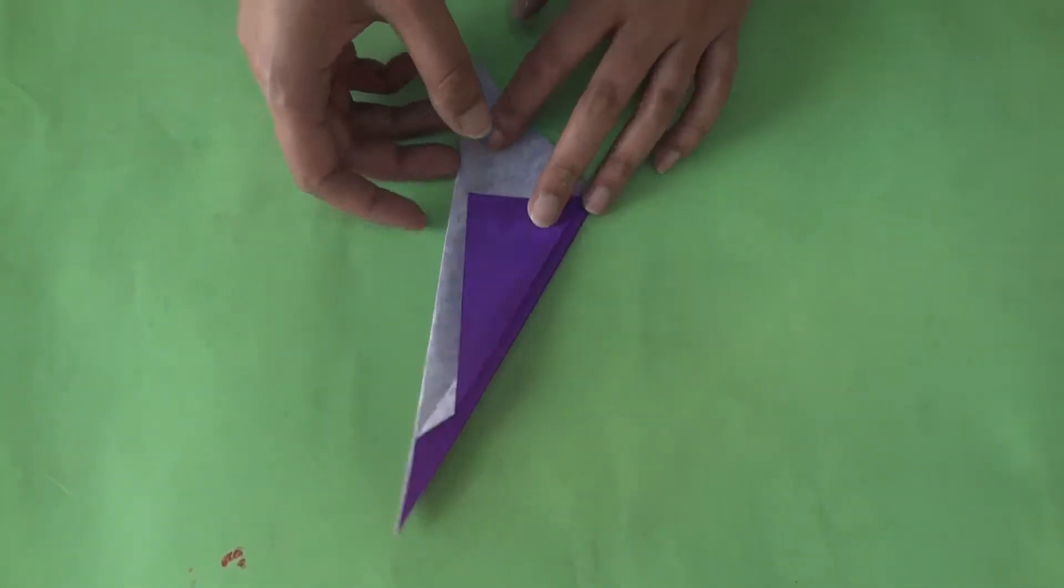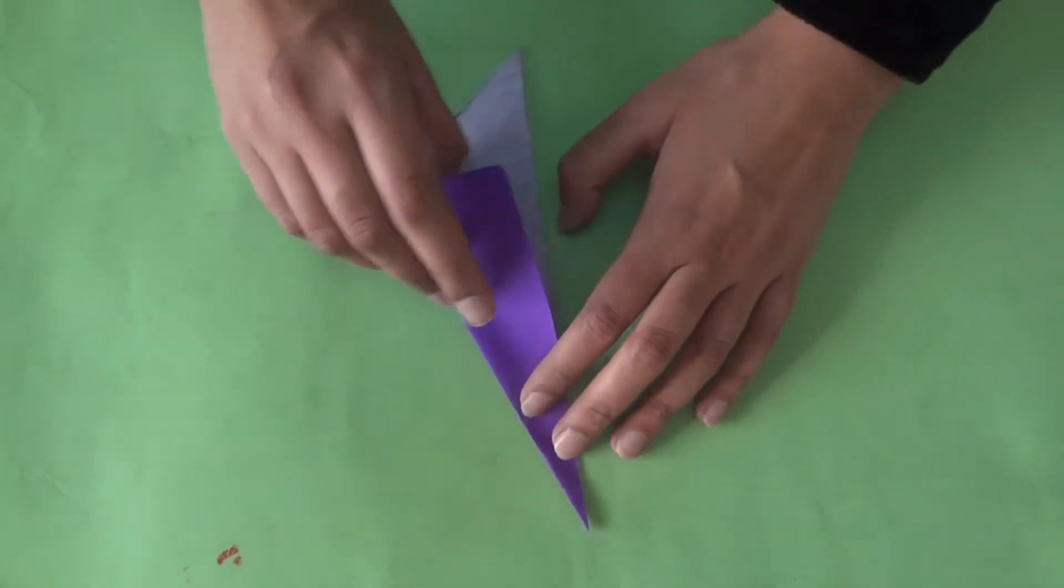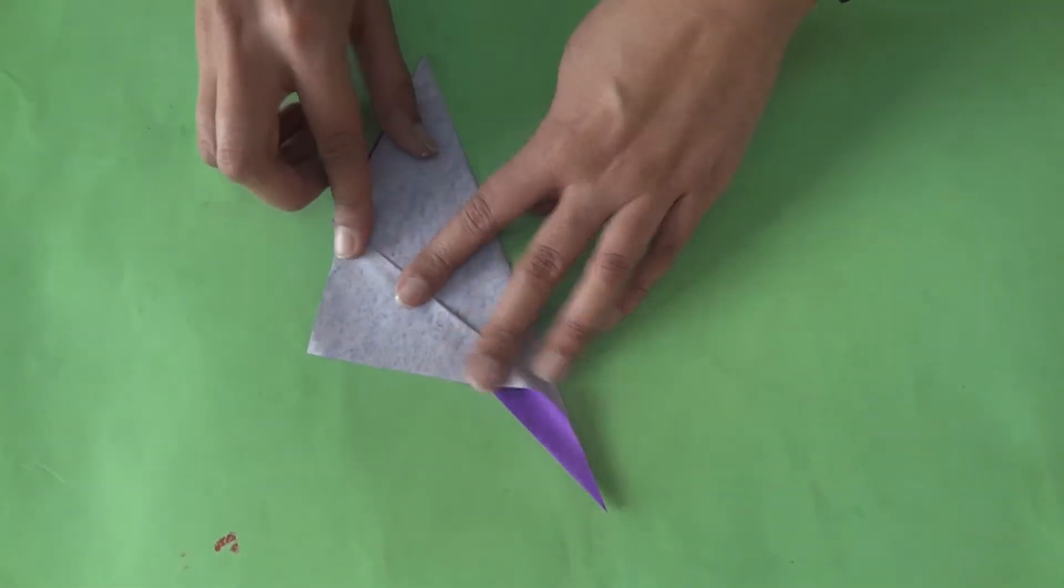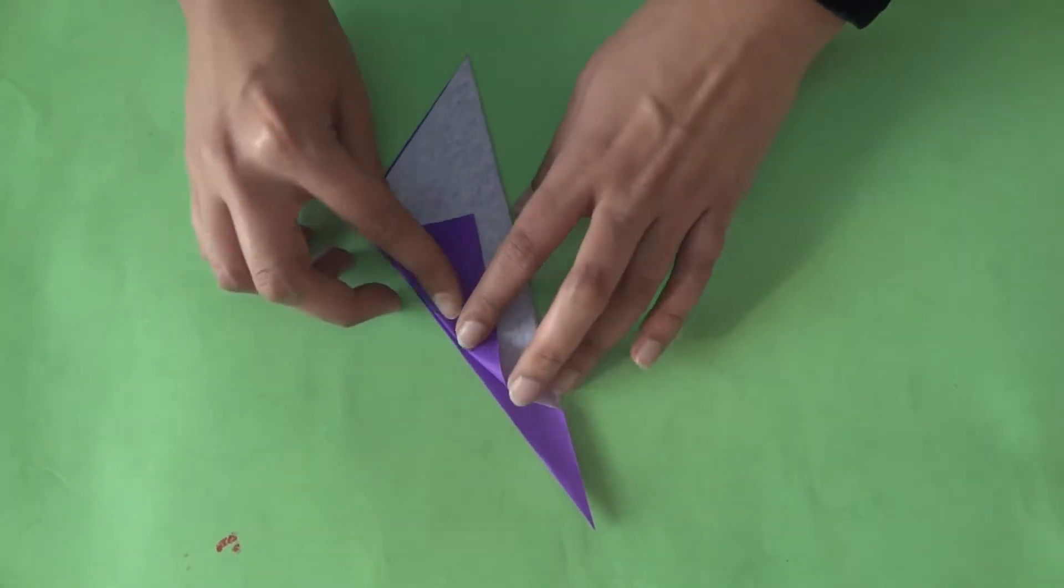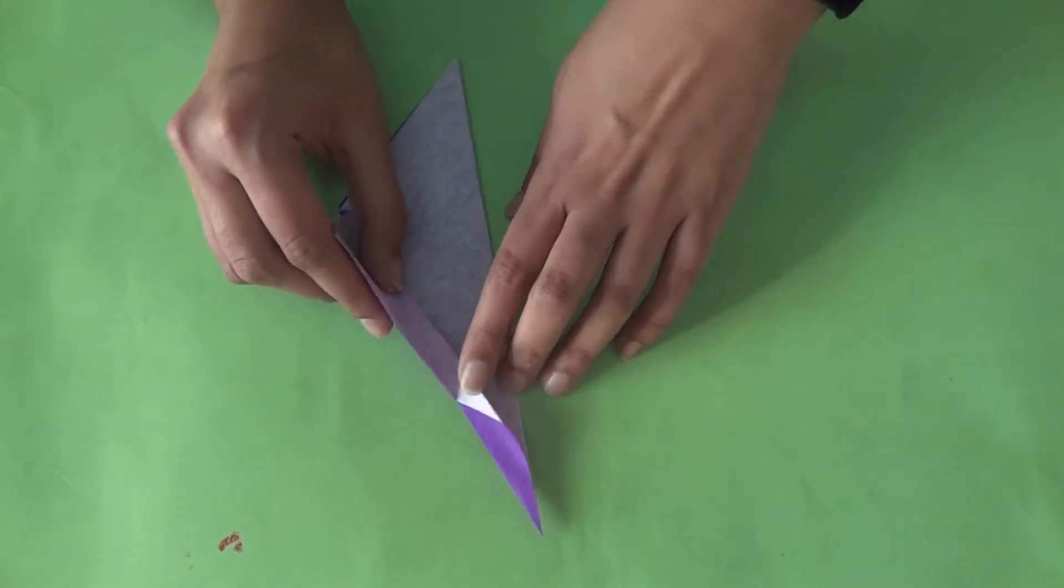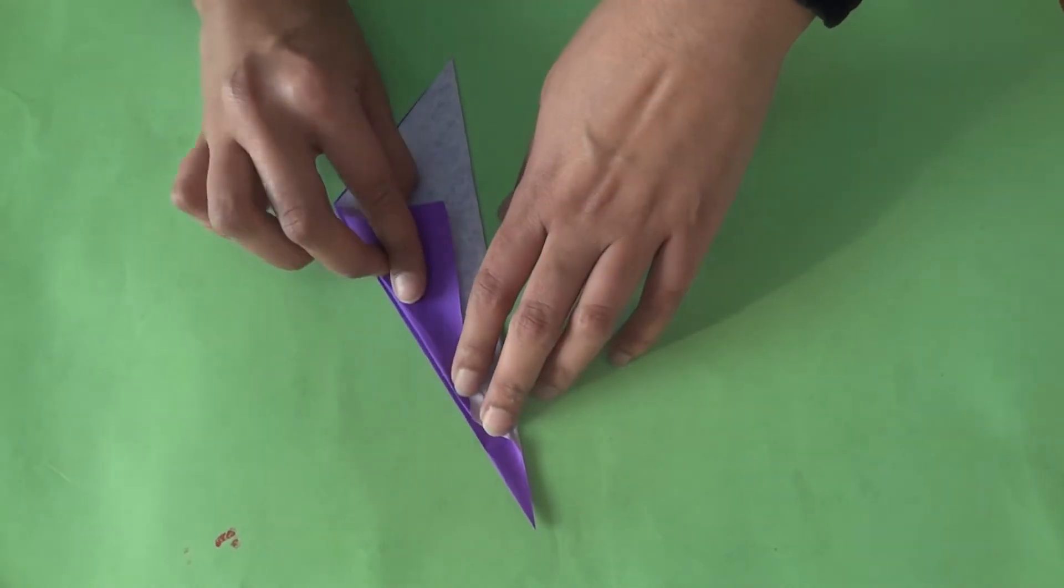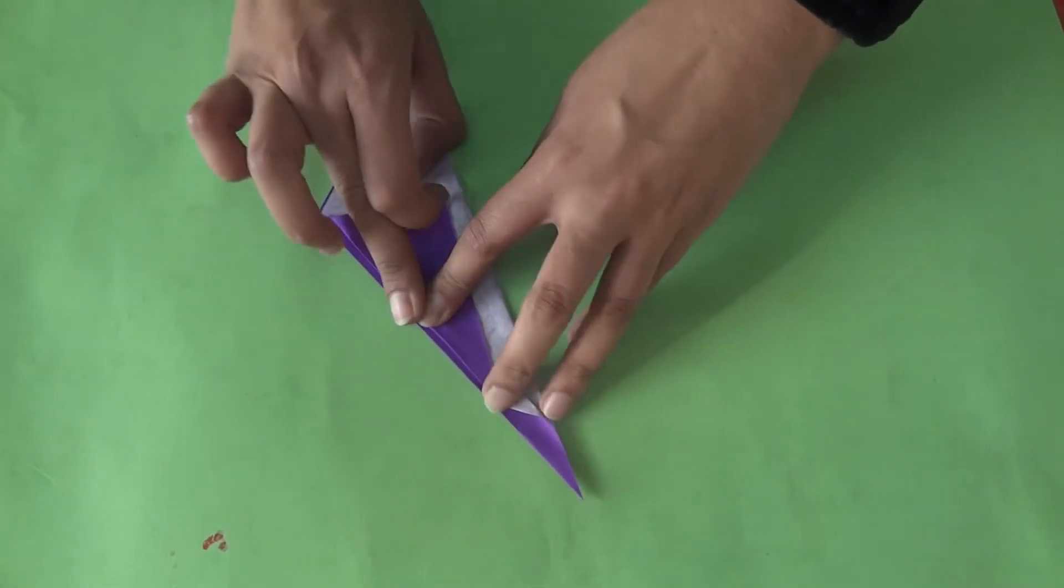Like this. Repeat the same on the other side. Fold it backwards and then pull it forwards. Like this.